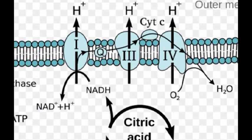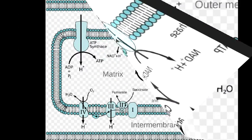Reduced NADH also goes to inner membrane proteins. Hydrogen ions pass from the matrix to the intermembrane space, and again electrons are released down an electron transport chain. Along the way they allow membrane proteins to transport hydrogen ions from the matrix to the intermembrane space. Eventually when the electrons meet up with the final membrane protein, they join up with oxygen to produce water and help some more hydrogen ions to get through from the matrix to the intermembrane space.